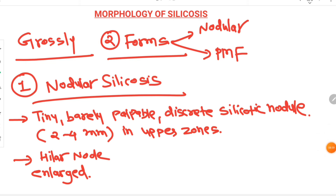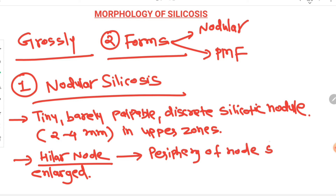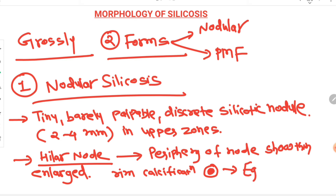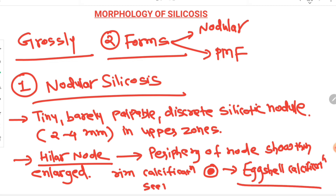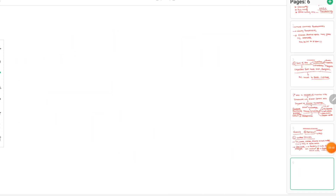When the hilar node is enlarged, sometimes the periphery of the node will show a thin rim of calcification, as seen in the figure. This thin rim of calcification at the periphery of the node is known as eggshell calcification. It can be seen on X-ray, by which you can suspect silicosis as an occupational lung disease.